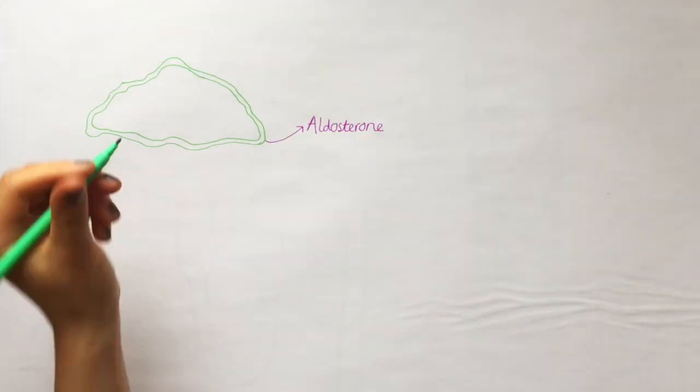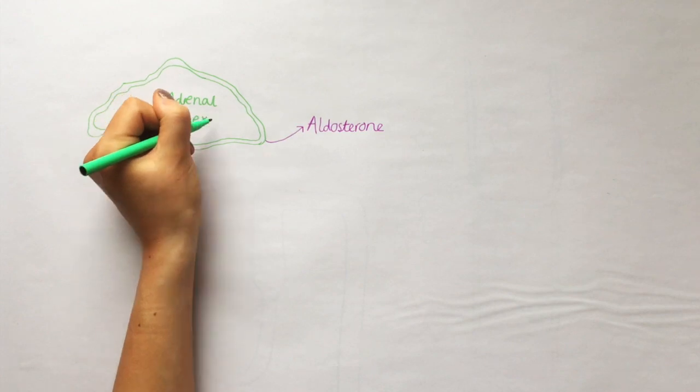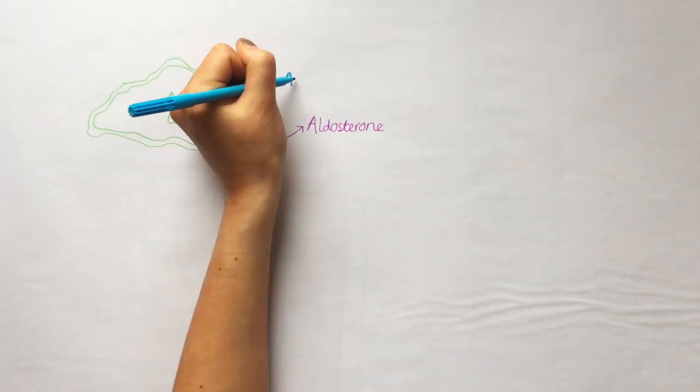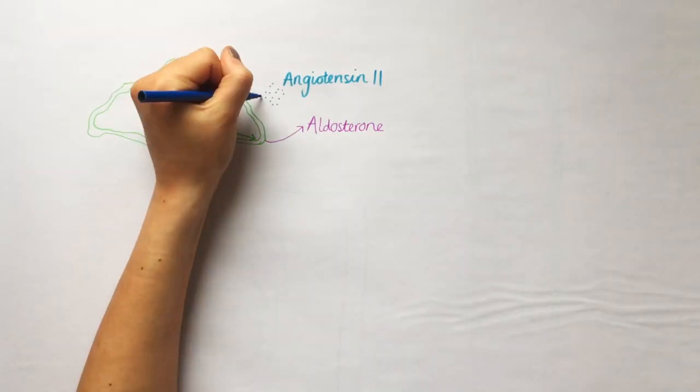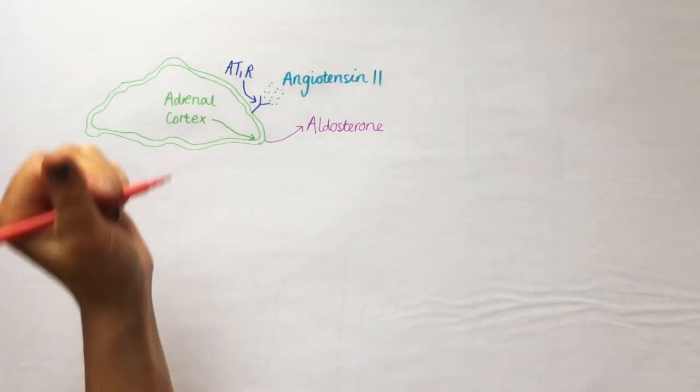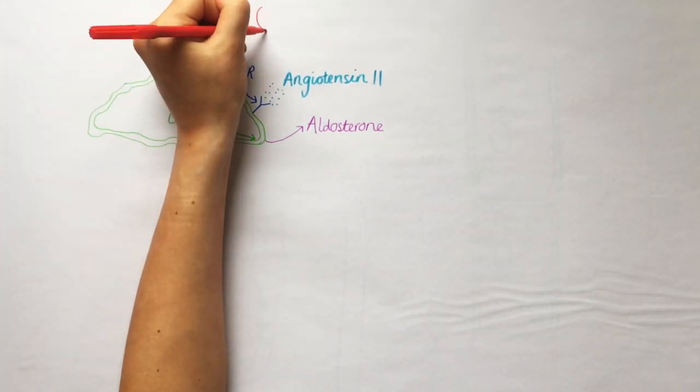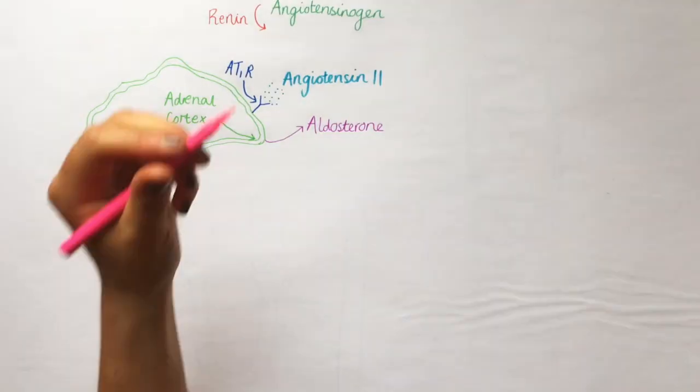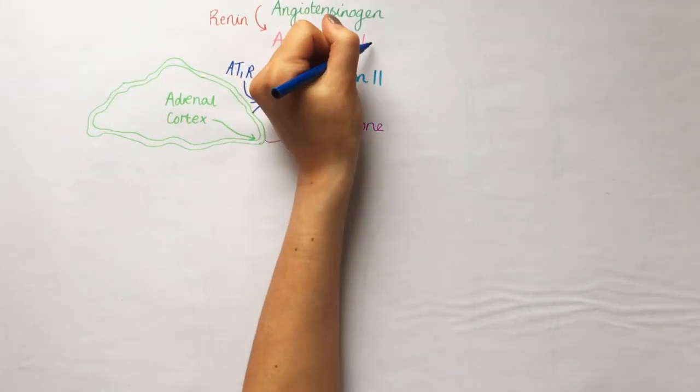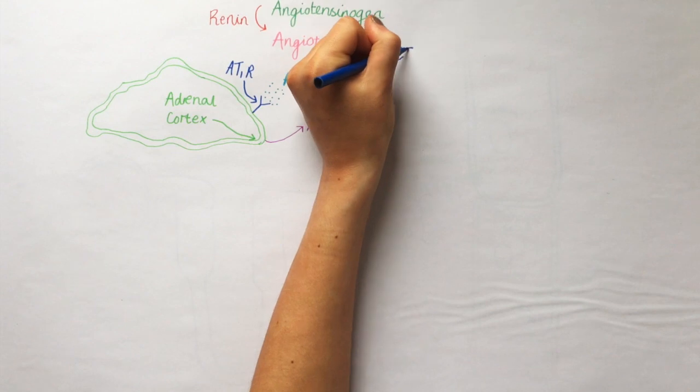Aldosterone is a mineral corticoid hormone produced in the adrenal cortex. It's secreted in response to angiotensin 2 binding to its AT1 receptors in the last stage of the RAS system, which is initiated by the hormone renin, converting angiotensinogen to angiotensin 1, which is quickly formed to angiotensin 2 by the enzyme ACE.